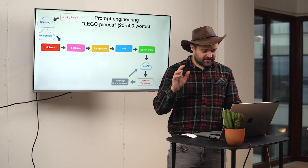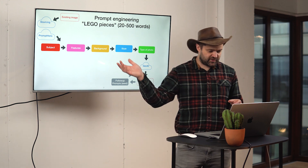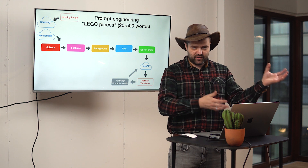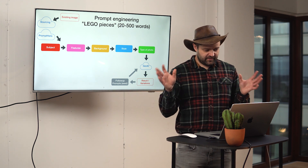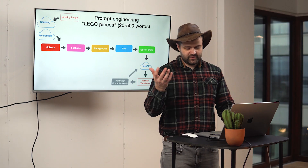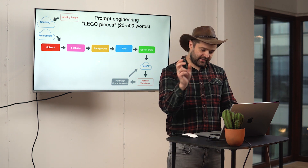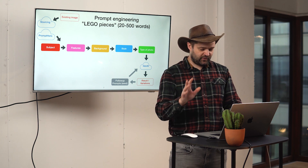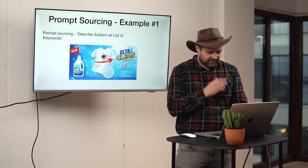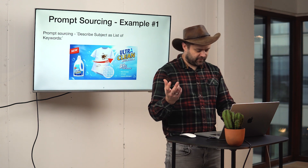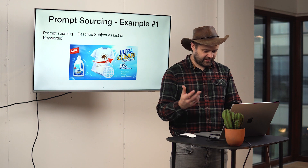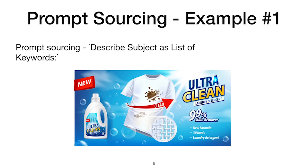Let's try some examples. First, let's generate an advertisement banner for some kind of cleaning detergent. The easy way is to use prompt sourcing. I'll jump into ChatGPT, because ChatGPT includes image processing tools nowadays. You must be in GPT-4 — it will not work with the free version. In this paid version, I'll put in the banner image and ask it to generate a prompt sourcing description.